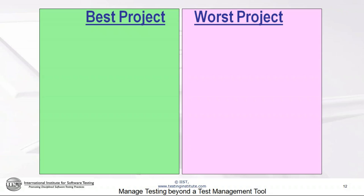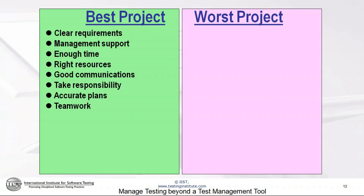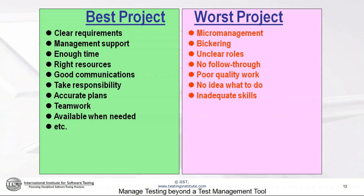One of the things I like to do in my courses is ask participants to think back to their experience with projects and identify the characteristics of the best projects and the worst projects. Clear requirements, the right resources, good communication, teamwork, and availability tend to characterize best projects. Worst projects tend to have micromanagement, a lot of bickering, unclear roles, no follow-through, poor quality work — often because people don't know what to do — and project members who may not have adequate skills or appropriate tools.